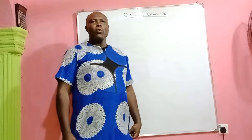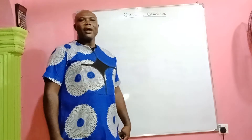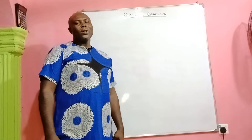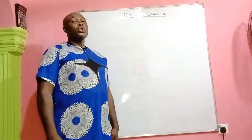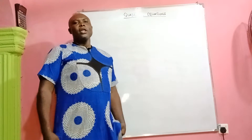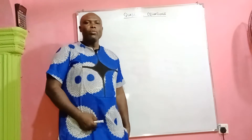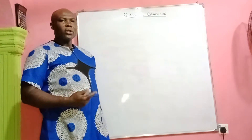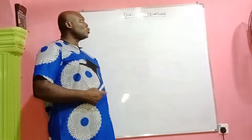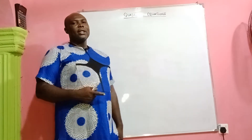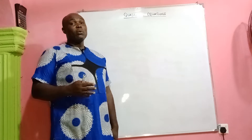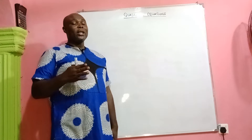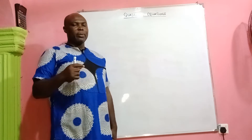Hello viewers, welcome to Simplified Maths class. In the last topic we had, which was simultaneous equations, we were able to learn how to use Cramer's Rule method, which is the determinants method in solving simultaneous equations. We also used the elimination method and the substitution method, and we realized that whichever method you use, the answer should still be the same.